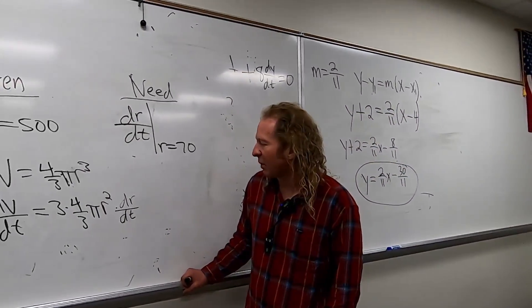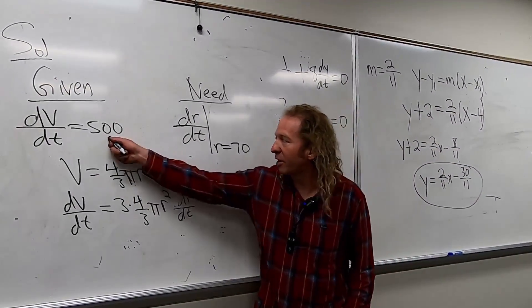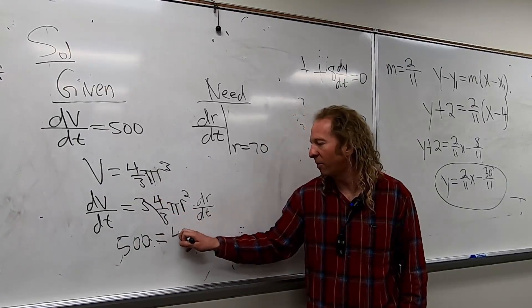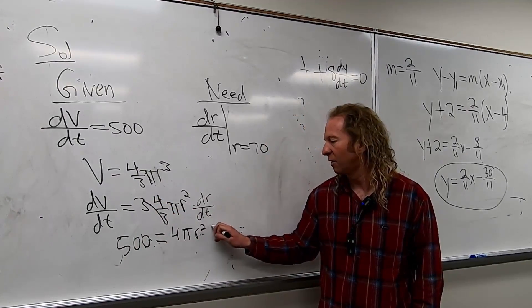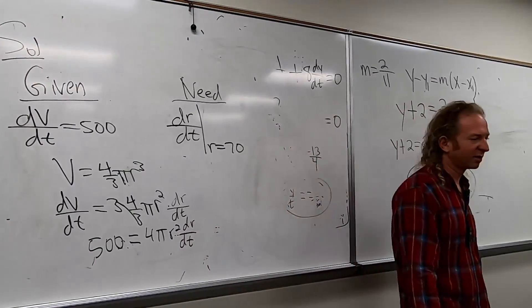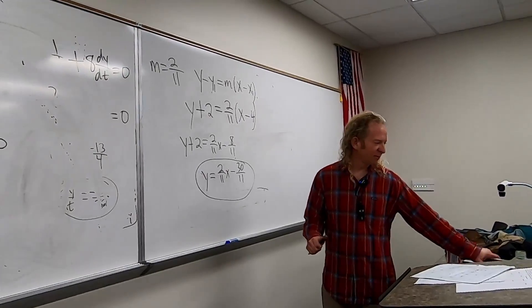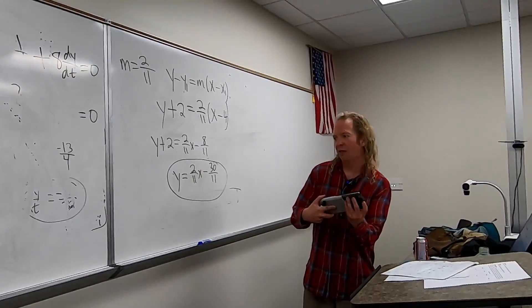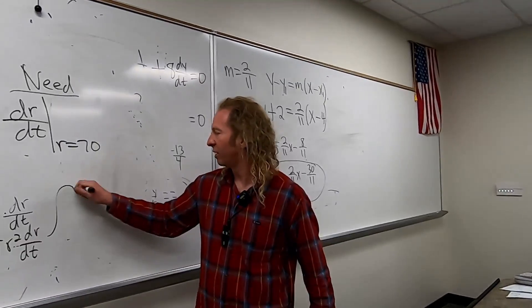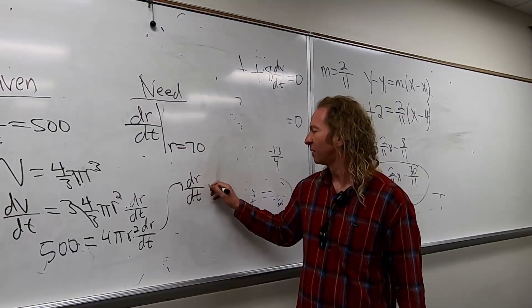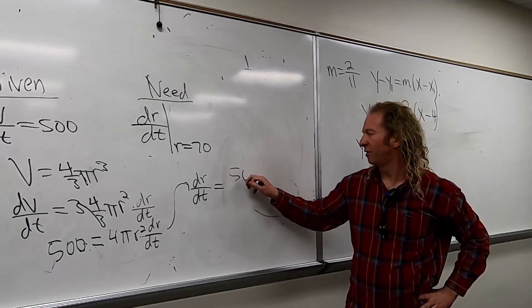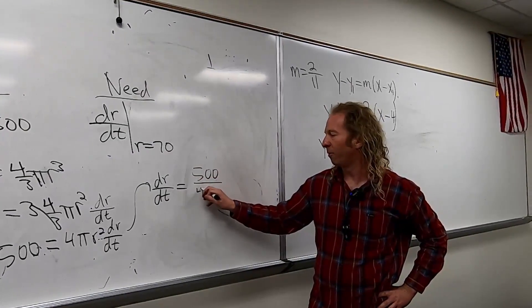We're looking for dr/dt. So now we can plug some stuff in. Let's go ahead and plug this in. So we have 500 equals 4 pi r squared dr/dt.